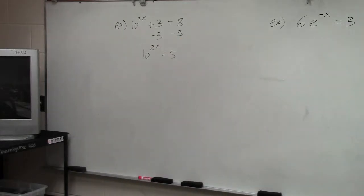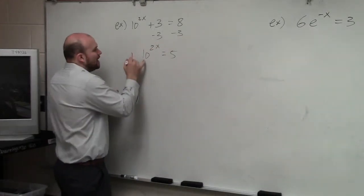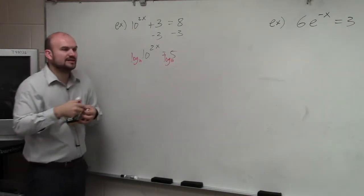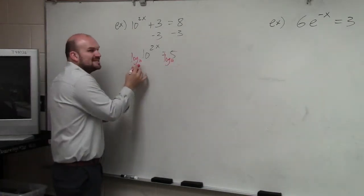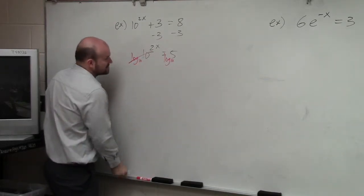Now, the next thing is I need to get my variable off as a power. So what I'm going to do is take the log of base 10 on both sides. Because remember, when you take the log of base 10 of 10 raised to a power, that just leaves you with what the power is.